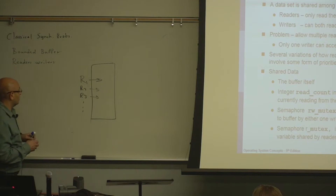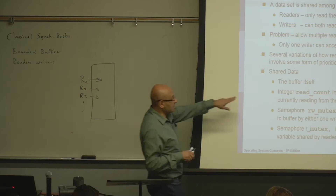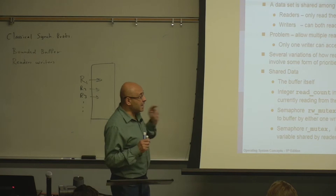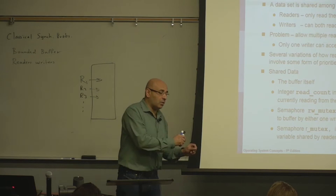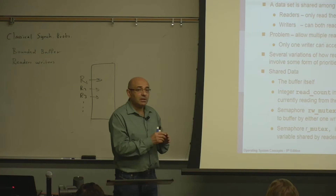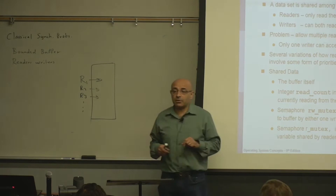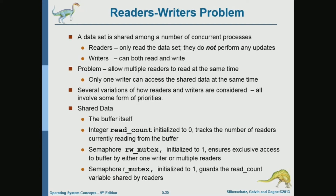How can we do this? We will use two semaphores and one shared variable. The shared variable is read count, which counts the number of readers in the buffer. The main semaphore is the RW mutex semaphore, which ensures the buffer is either in read mode or write mode. There is also an R mutex semaphore that protects access to the shared variable read count.